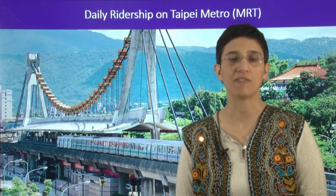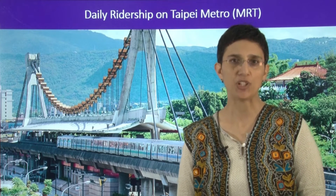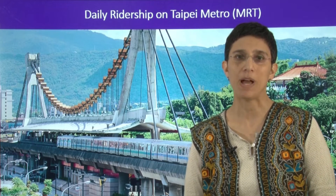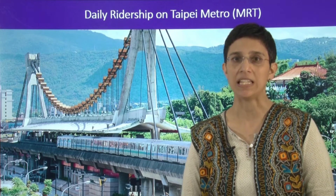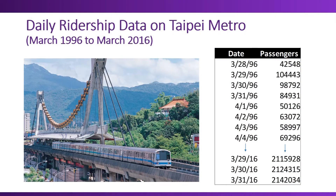Taipei is the capital of Taiwan and houses over two-and-a-half million people. Taipei has a very efficient metro system called the Massive Rapid Transit, or simply MRT. Thousands of people take MRT every day. We gather data for MRT ridership from the Taipei City website, and here we have data for 20 years of trips on Taipei MRT. We can see that our data have two columns: a date, and the number of passengers. In this example, we're looking at daily ridership, so we have dates for every single day.